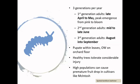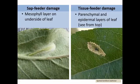There are three generations per year of tentiform leaf miner. First generation adults emerge late April to May, second generation adults are typically mid to late June, and third generation adults are usually August into September. Healthy trees can tolerate considerable injury, so thresholds are rather high or non-existent in that later stage when the foliage gets quite dense. However, with high populations it is entirely possible that premature fruit drop can occur, particularly in cultivars like McIntosh.